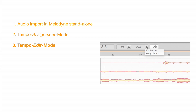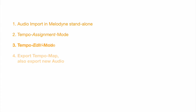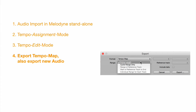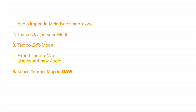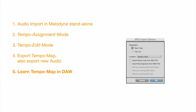In tempo edit mode, you improve the performance of the band. Export the tempo map as a MIDI file, along with new audio files if necessary. Finally, from the DAW, extract the tempo information from the MIDI file.